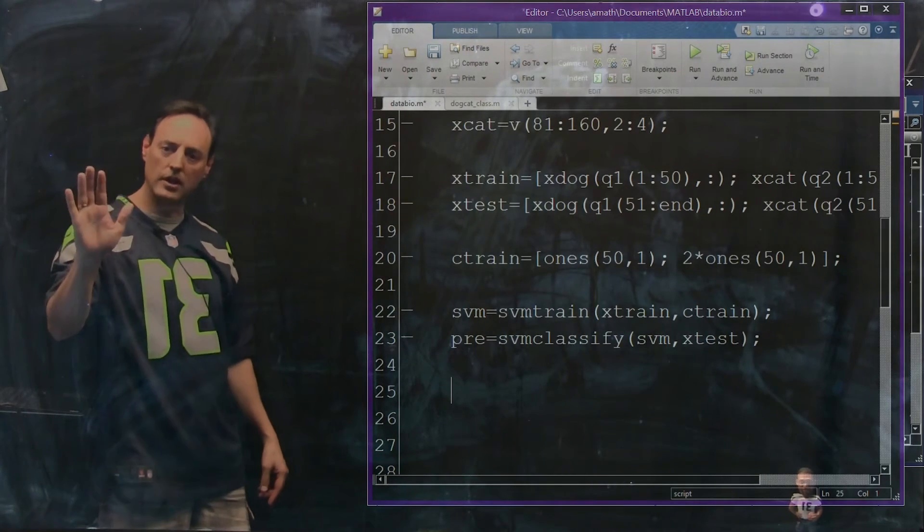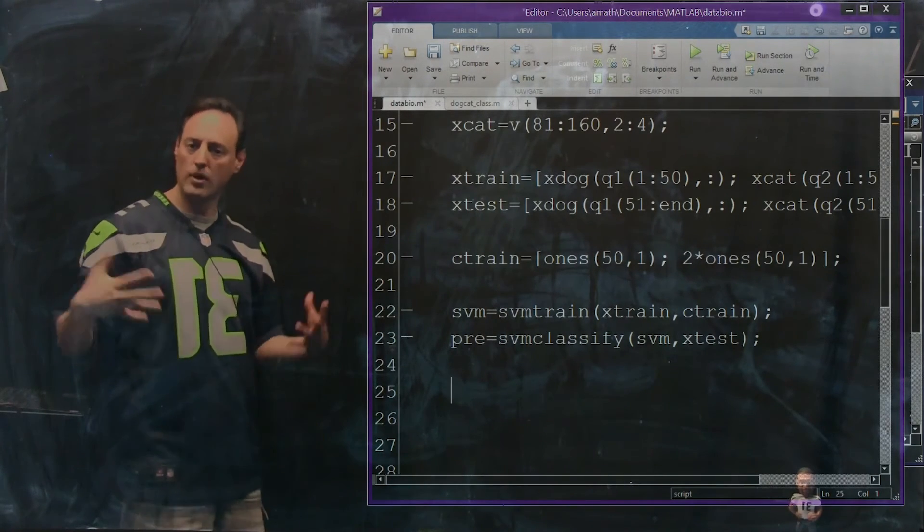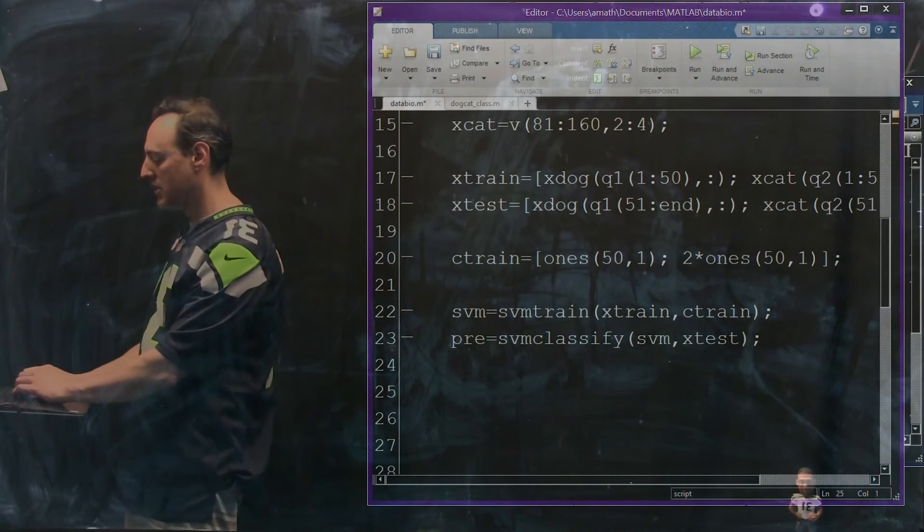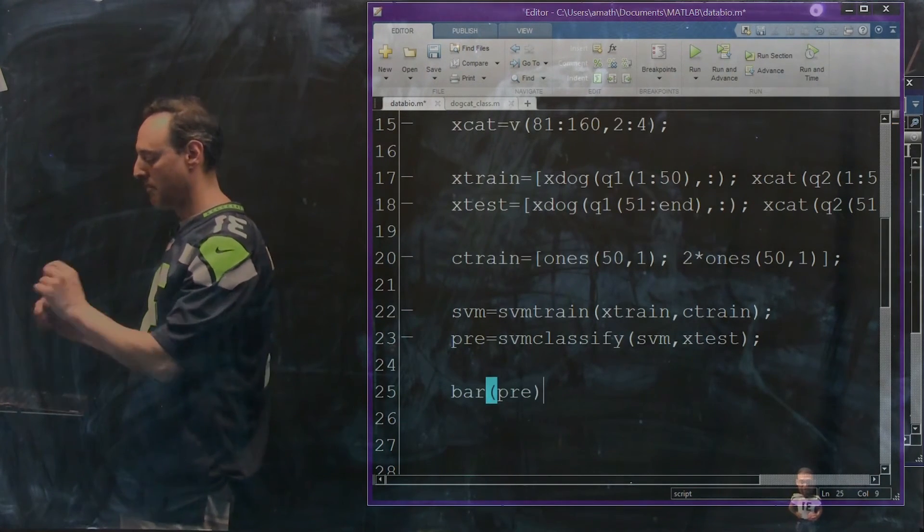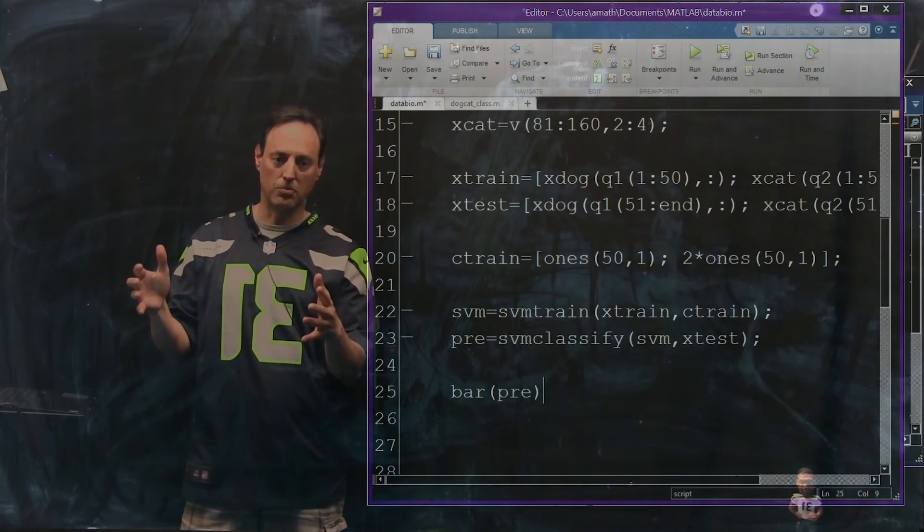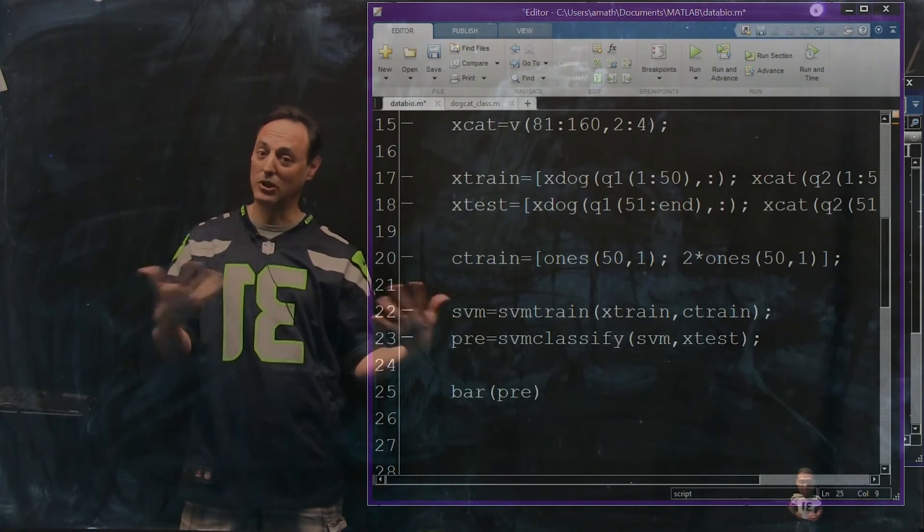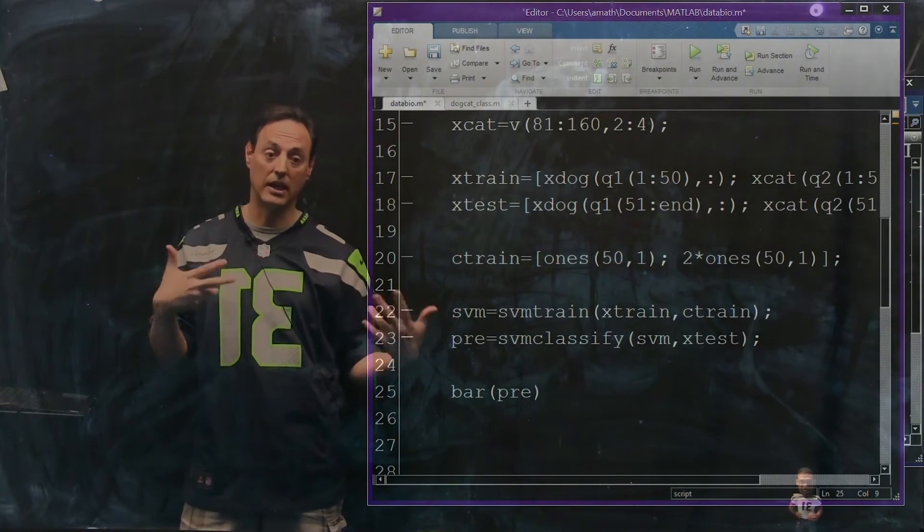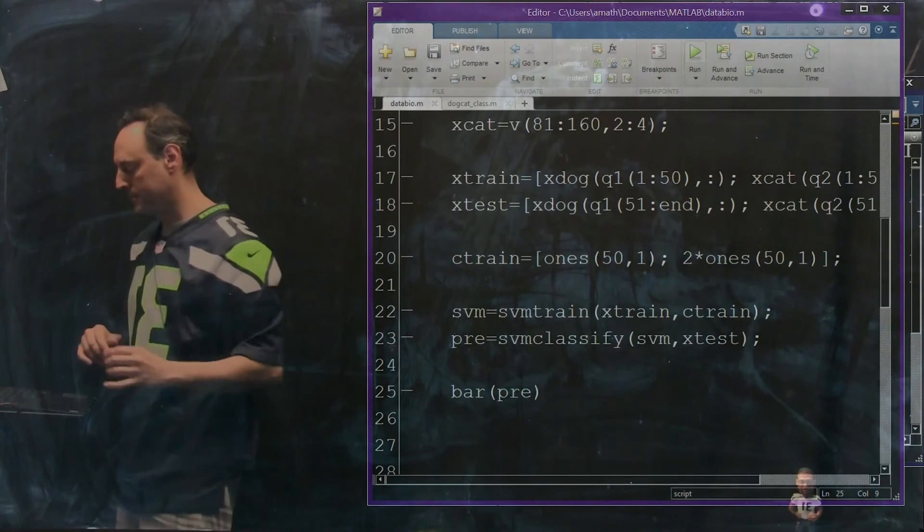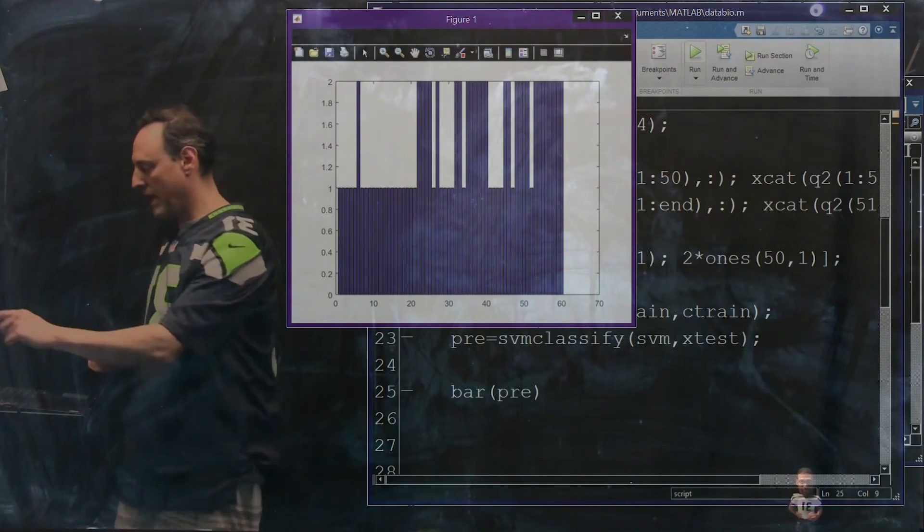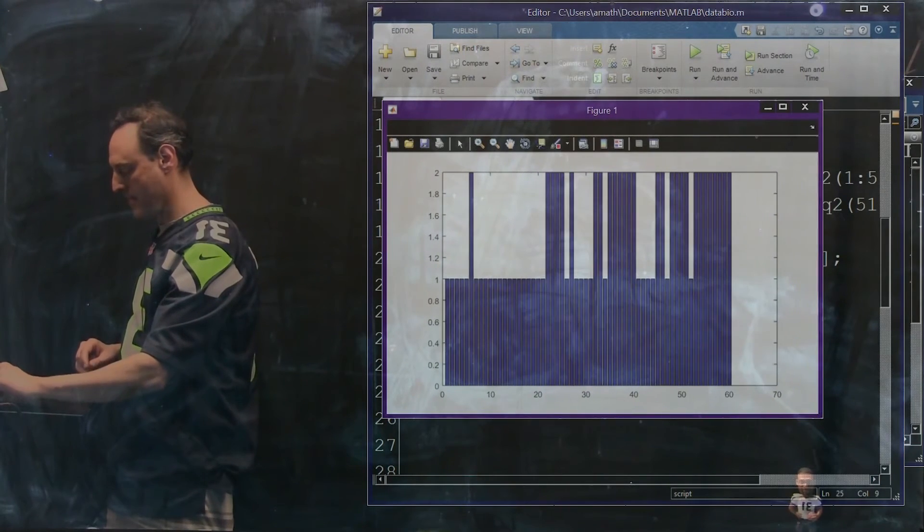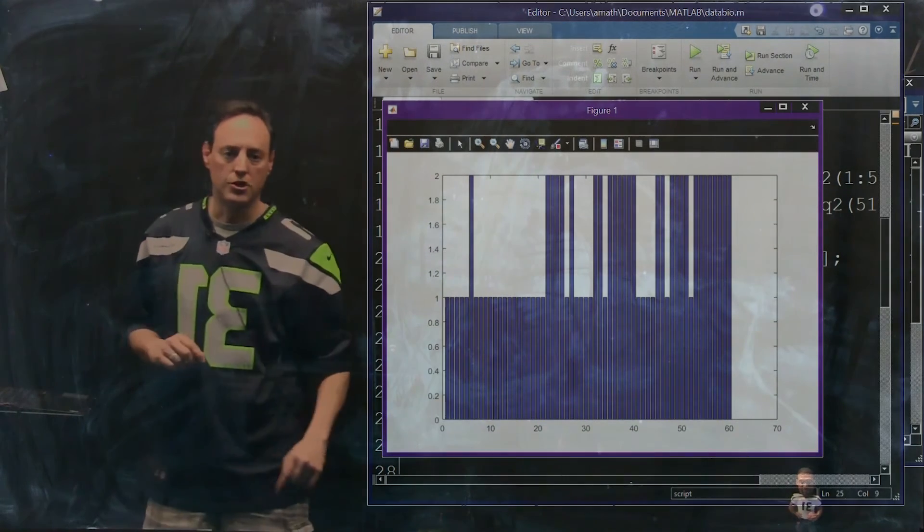So right, so whatever comes out of this SVM train is going to be stuck here in SVM. And this is going to be my decision boundary, what my support vectors are, where my decision space is. And so I'm going to now take new test data and throw it in. And everything's going to come out in my test data as either ones or twos. It's going to label every point I put in as either dog or cat. That's what I've given it. So it's going to come back with that. So again, what we can do is just simply plot bar pre. And what we know is the first 30 points are supposed to be ones and the next 30 points are supposed to be twos. And we can look and see what we actually got on any single trial. So let's go ahead and run this.